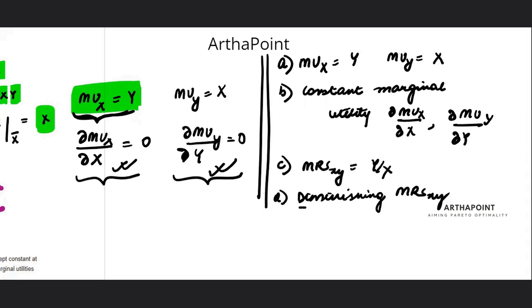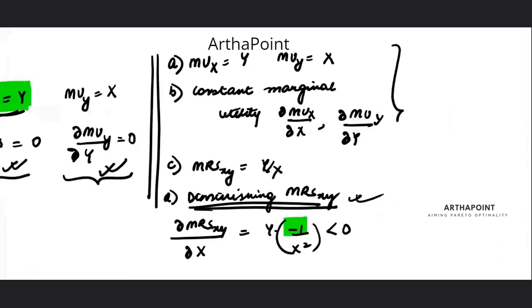You can also check whether MRS is diminishing or not by differentiating MRS with respect to X. And when you will differentiate this with respect to X, you will get minus 1 by X squared. Because of the negative sign, this is less than 0, so it is diminishing. So these are the four things that we solved from this question.